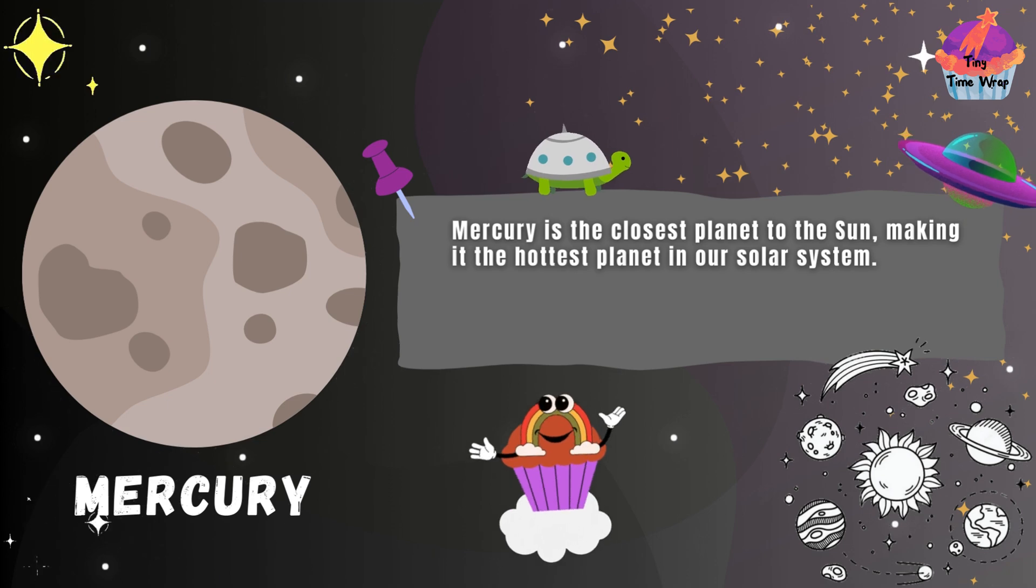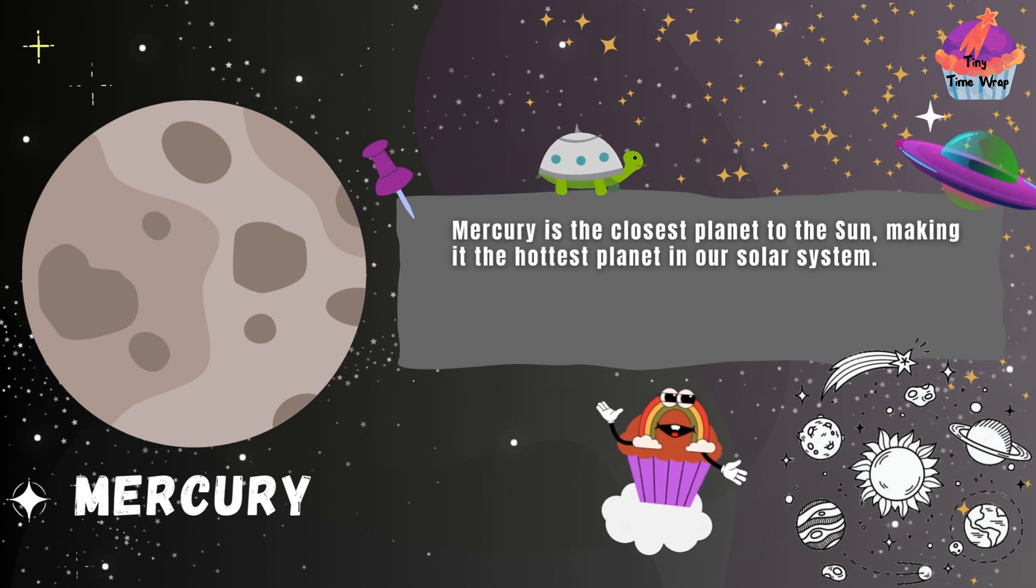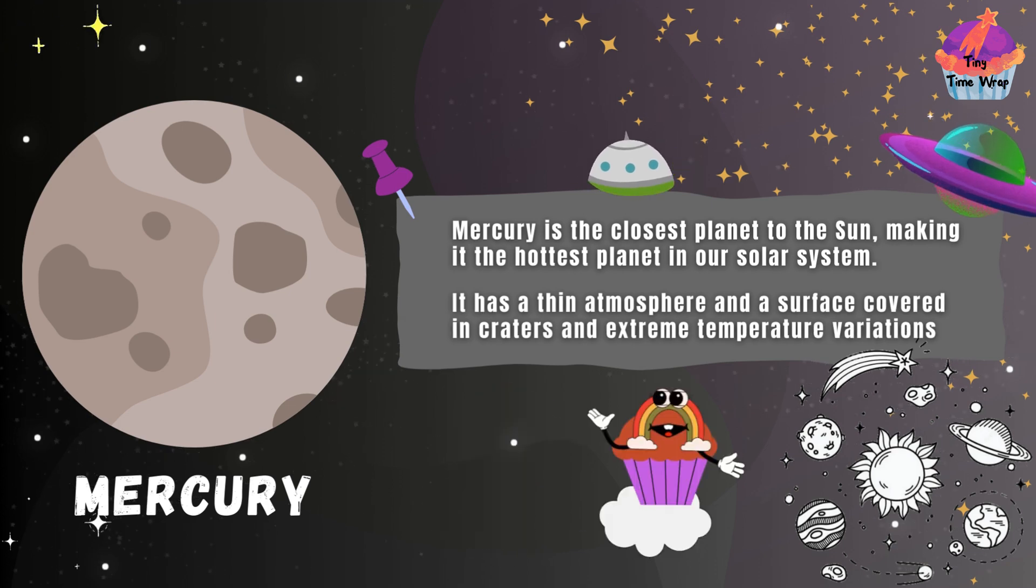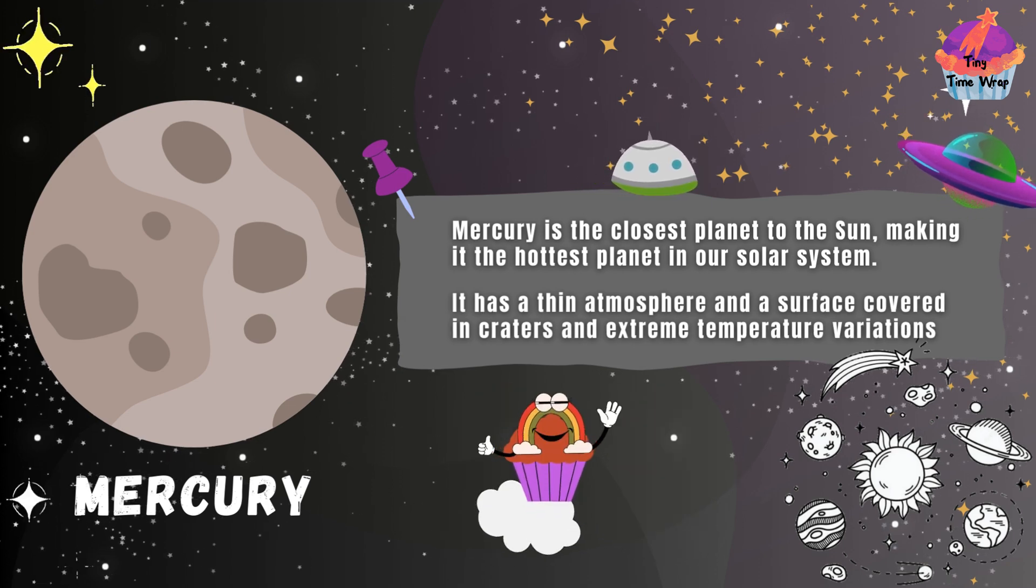Mercury is the closest planet to the Sun, making it the hottest planet in our solar system. It has a thin atmosphere and a surface covered in craters and extreme temperature variations.